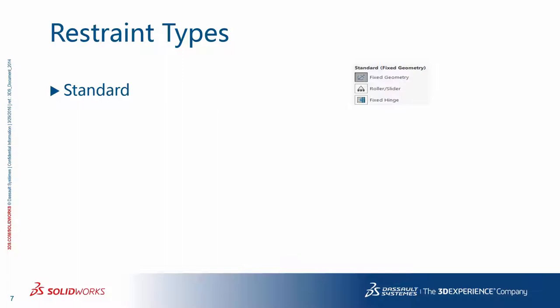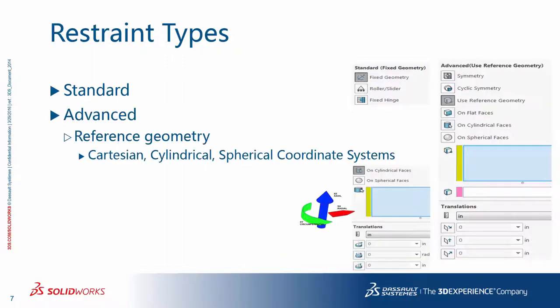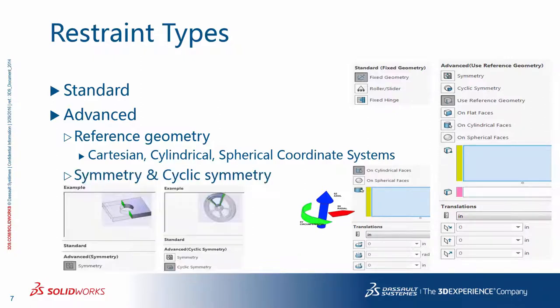Restraint types include standard restraints: fixed geometries, roller, slider, and fixed hinge. Under advanced restraints, to make it most flexible, you can use reference geometry and apply restraints in Cartesian, cylindrical, and spherical global or user-defined coordinate systems on different entities. You can also take advantage of symmetry or cyclic symmetry if your model and loading qualifies for it, and the program will apply the right boundary conditions for these two scenarios accordingly.